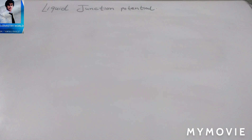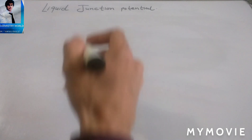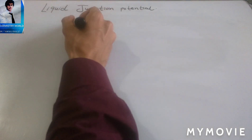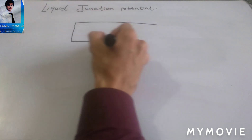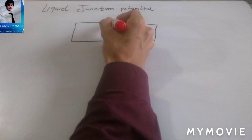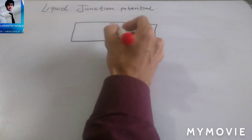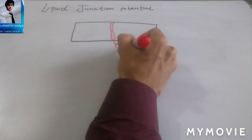Our topic is liquid junction potential and its determination. First of all, we have to discuss and understand the liquid junction potential via explanation, and then make a suitable definition from this explanation. So we start with the explanation. Consider we have a cell consisting of two chambers which are separated by a porous membrane.